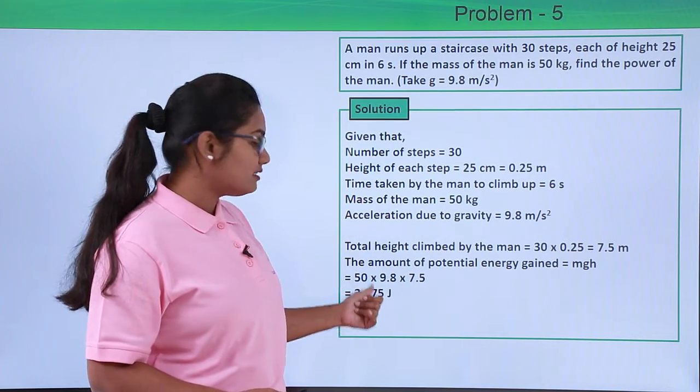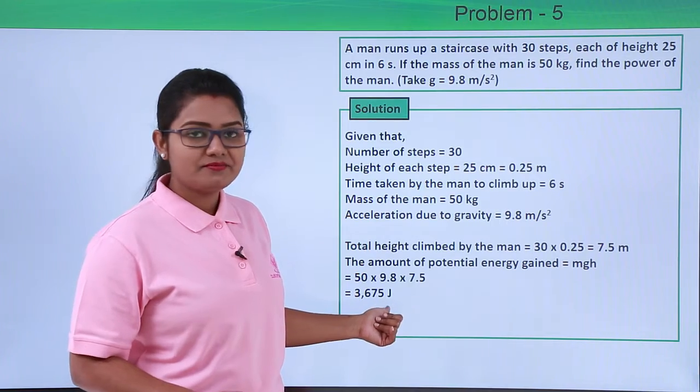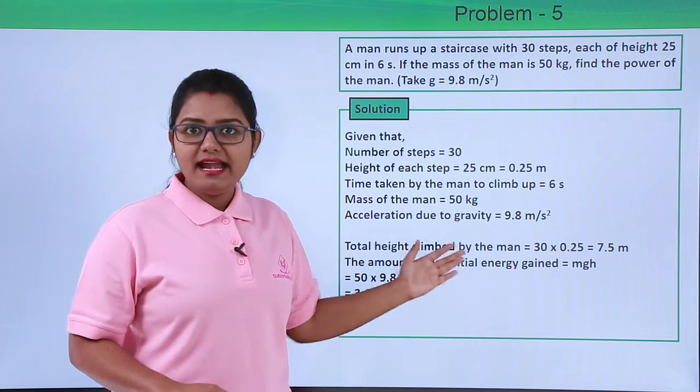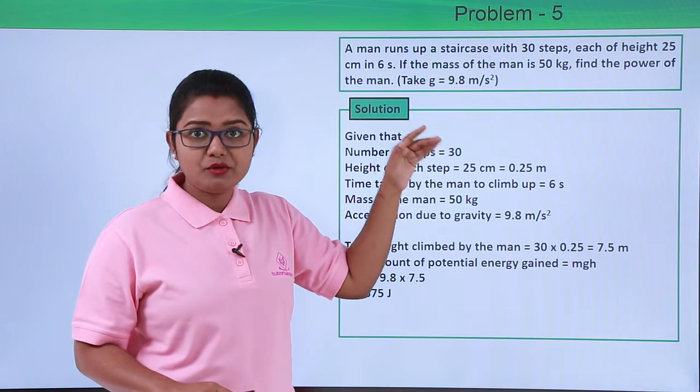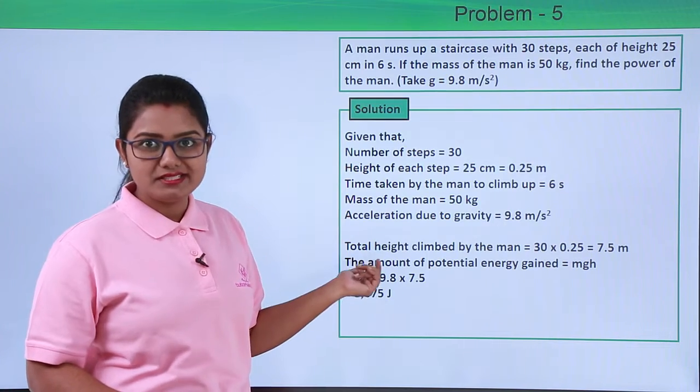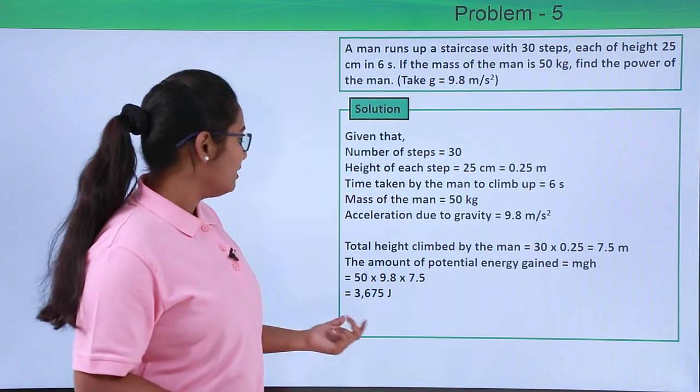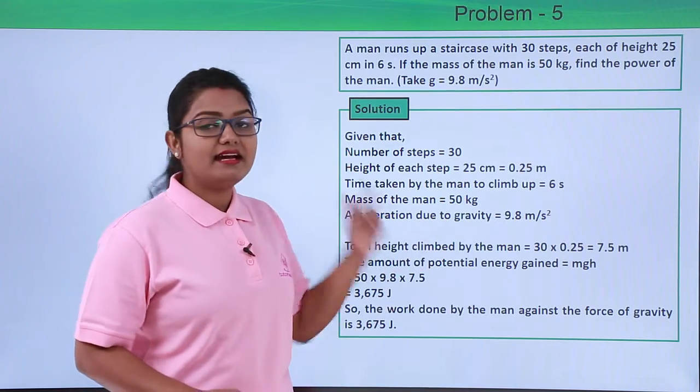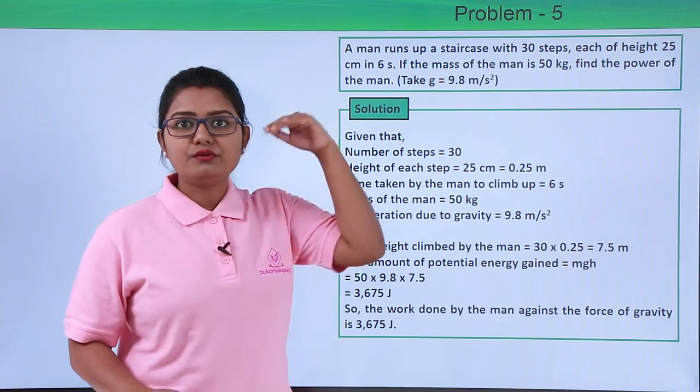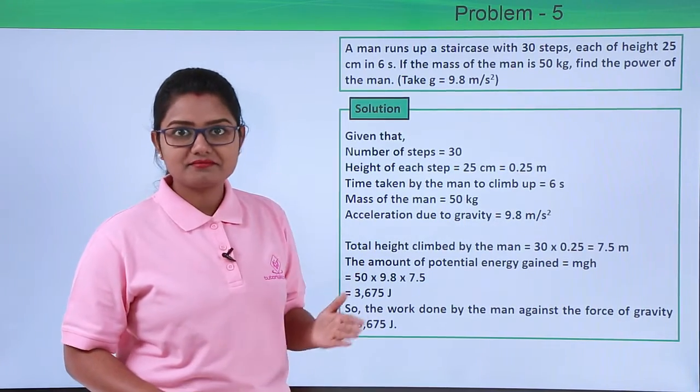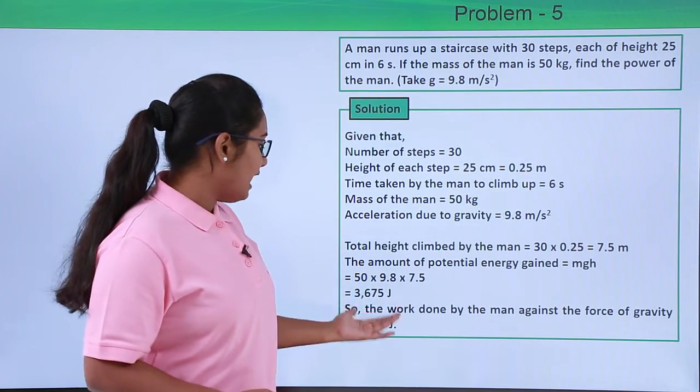to be 3675 joules. So the potential energy of the man at a height of 7.5 meters was found to be 3675 joules. So this is the work done by the man against the force of gravity to reach a height of 7.5 meters on climbing the staircase.